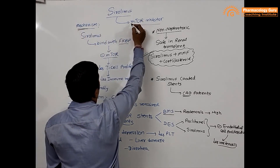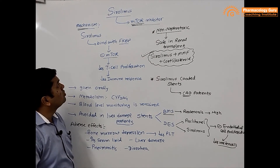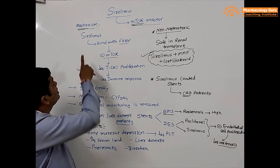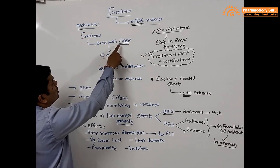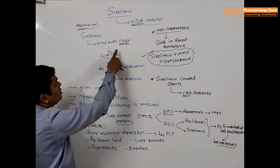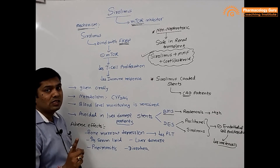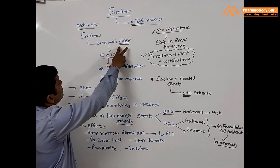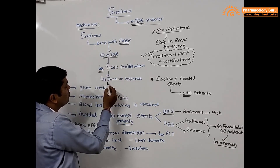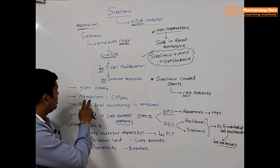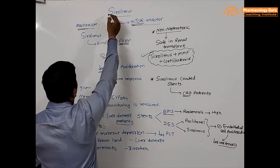In summary: Sirolimus is an mTOR inhibitor and immunosuppression agent. Its mechanism involves binding with FKBP — FK506 binding protein — at a different binding site than tacrolimus, inhibiting mTOR, thereby reducing T-cell proliferation and the immune response.